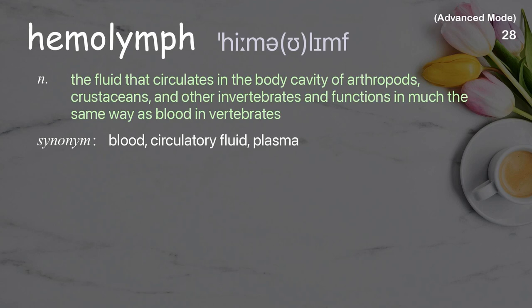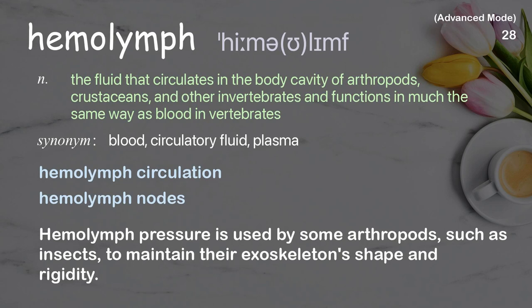Hemolymph: The fluid that circulates in the body cavity of arthropods, crustaceans, and other invertebrates and functions in much the same way as blood. Examples: hemolymph circulation, hemolymph nodes. Hemolymph pressure is used by some arthropods, such as insects, to maintain their exoskeleton's shape and rigidity.